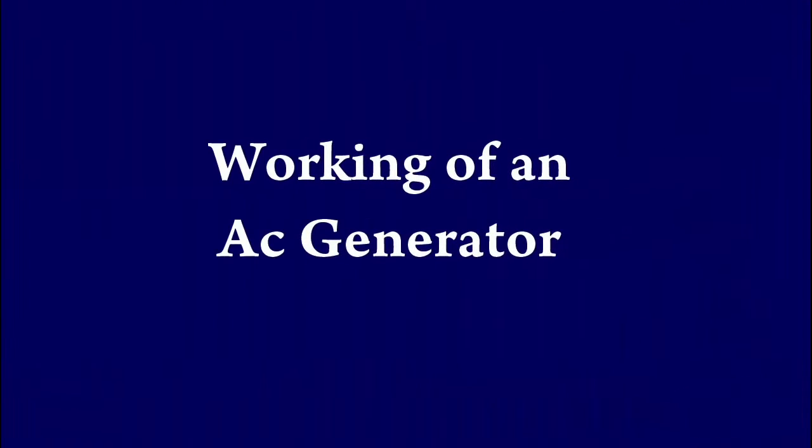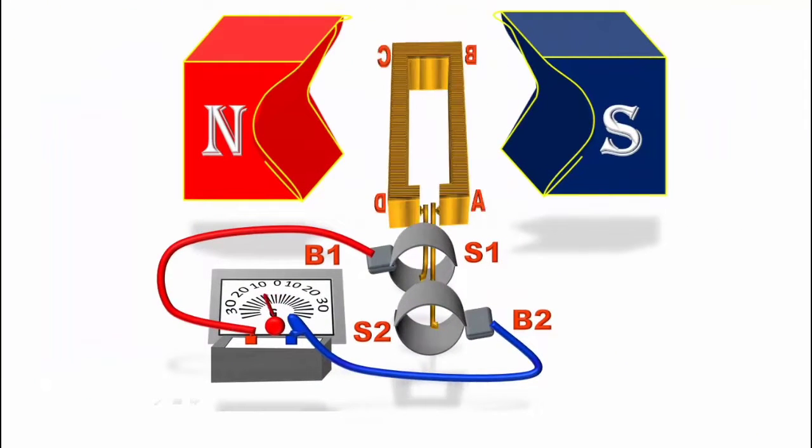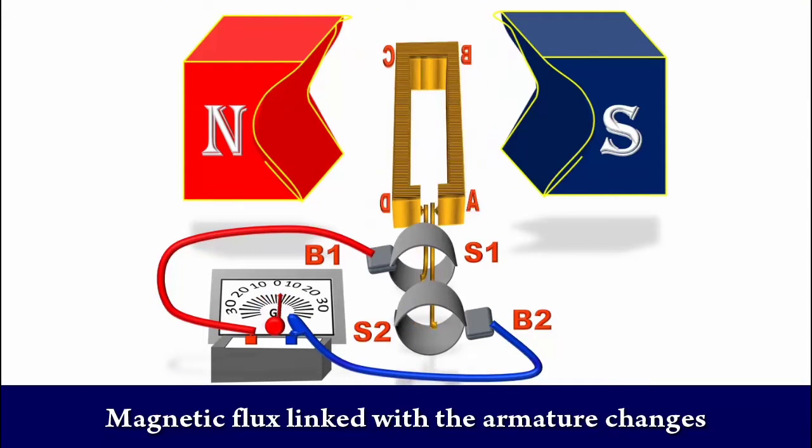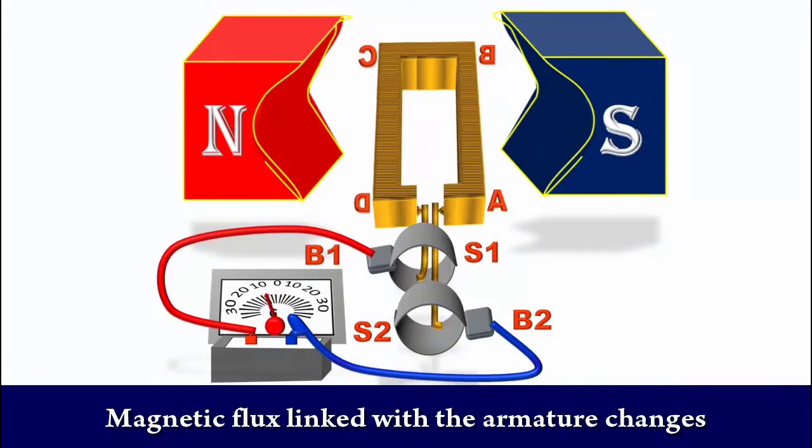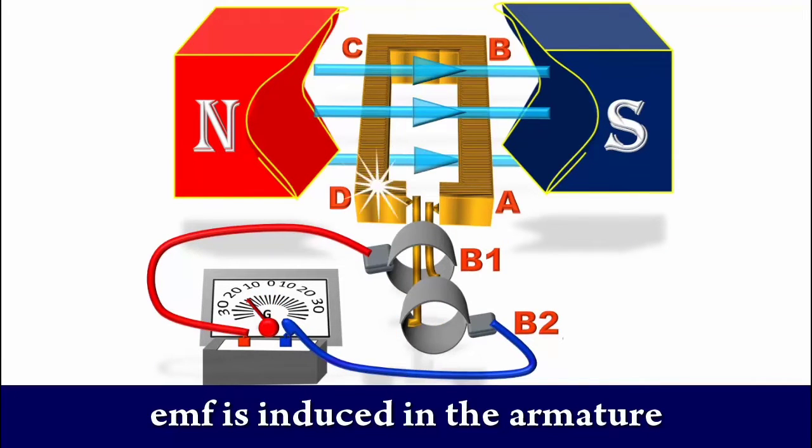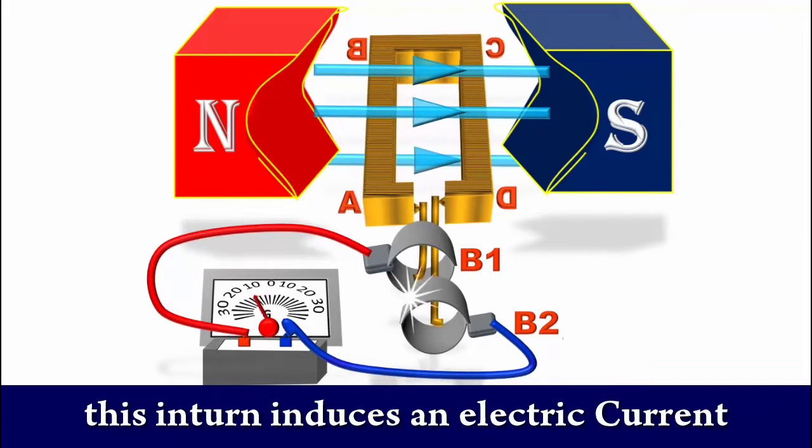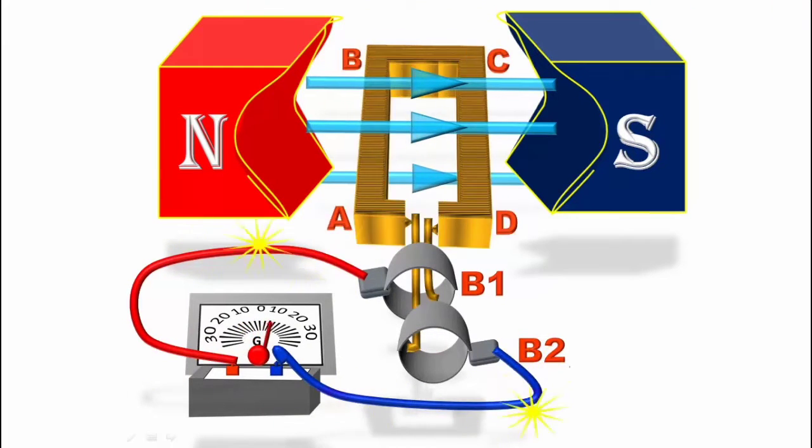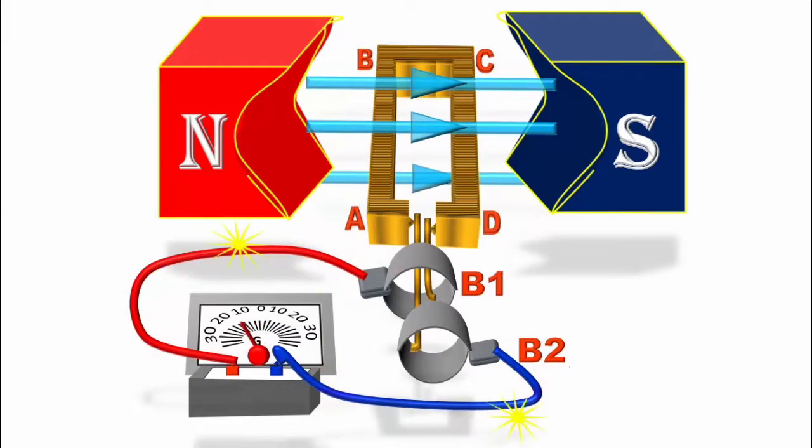When the armature rotates between the poles of the field magnets, the magnetic flux linked with the armature changes continuously. As a result, an EMF is induced in the armature. This in turn induces an electric current in the coil. As the two ends of the armature are connected to an external circuit, electric current starts flowing through it.